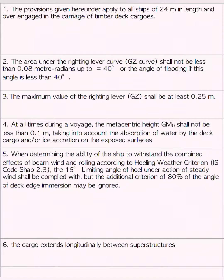The maximum value of righting lever shall be at least 25 centimeters, whereas in other ships the righting lever was at least 20 centimeters at an angle of heel greater than or equal to 30 degrees. It may appear that the GZ requirement is more stringent for timber cargo, but remember, it's the maximum value of the righting lever in this case. As timber cargo has the tendency to absorb water or allow ice creation on exposed surfaces, if we consider these two possibilities in our calculation, the GM requirement automatically reduces. Thus, at all times during a voyage, metacentric height shall not be less than 10 centimeters — compared to 15 cm for normal ships, giving 5 centimeters of leeway.